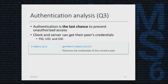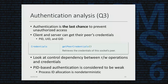Authentication analysis inspects authentication on the app side. If an app is using Unix domain sockets and its socket address is insecure, authentication would be the last chance to prevent unauthorized access. If there is no authentication, or if authentication is weak, the app will be vulnerable. A server can gather peer credentials, which has three fields: PID, UID, and GID — there is an API for that. We look at control dependencies between reading and writing operations and credentials. PID-based authentication is considered weak because process ID allocation is non-deterministic.